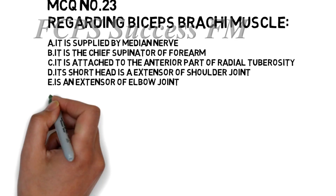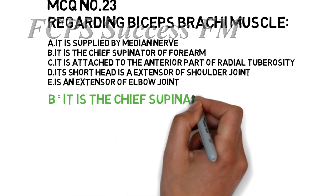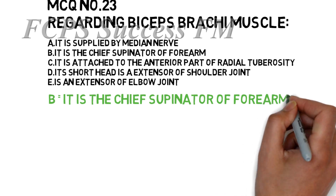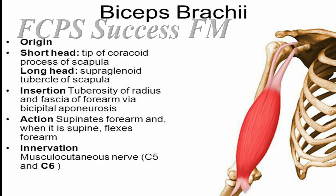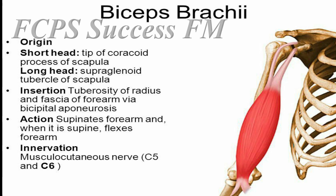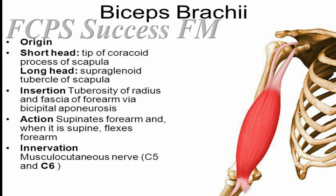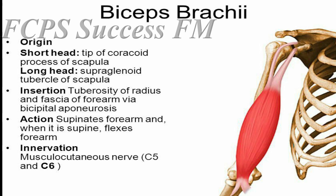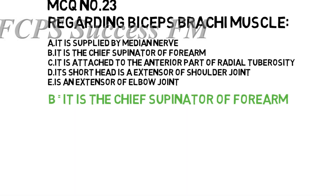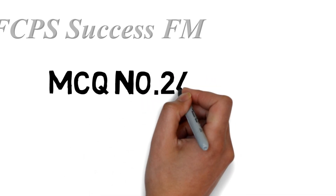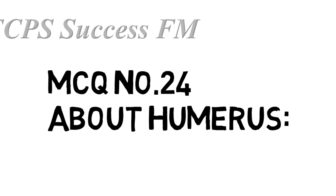The correct answer is option B — biceps brachii is the chief supinator of the forearm. The other options are wrong because it is supplied by the musculocutaneous nerve, not the median nerve. It is attached to the anterior part of the radial tuberosity via the bicipital aponeurosis. It is a flexor of the shoulder joint and also a flexor of the elbow joint.